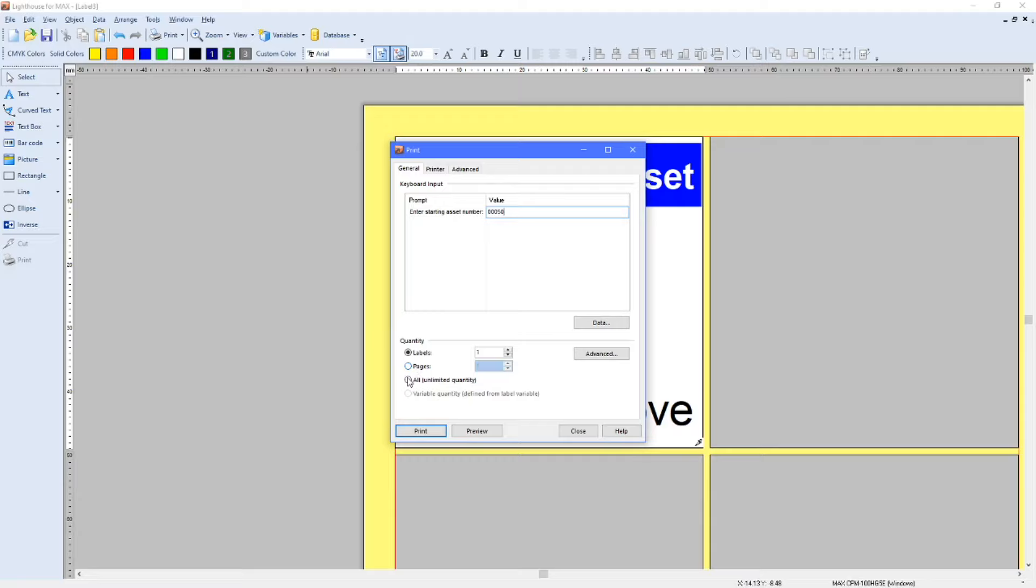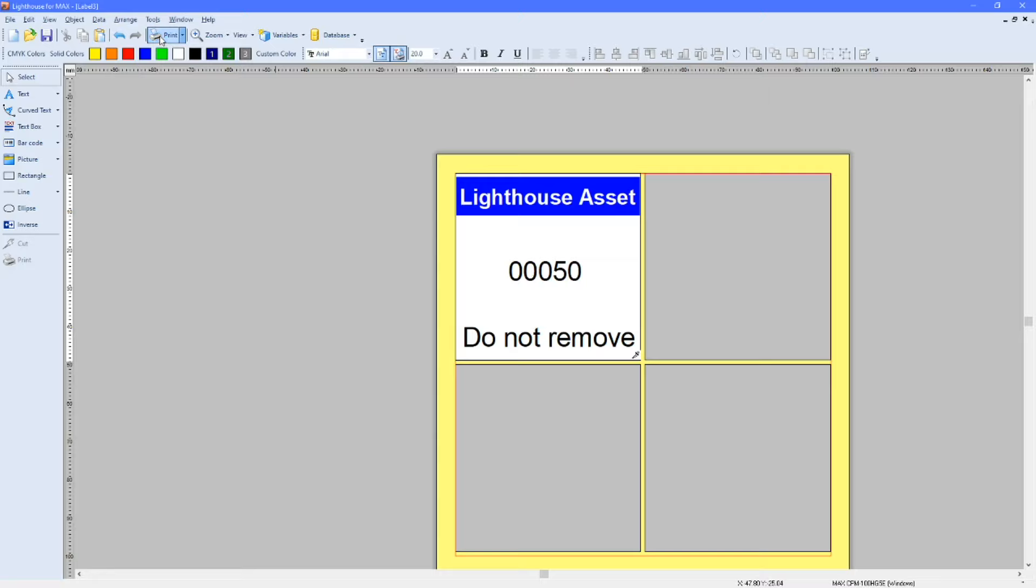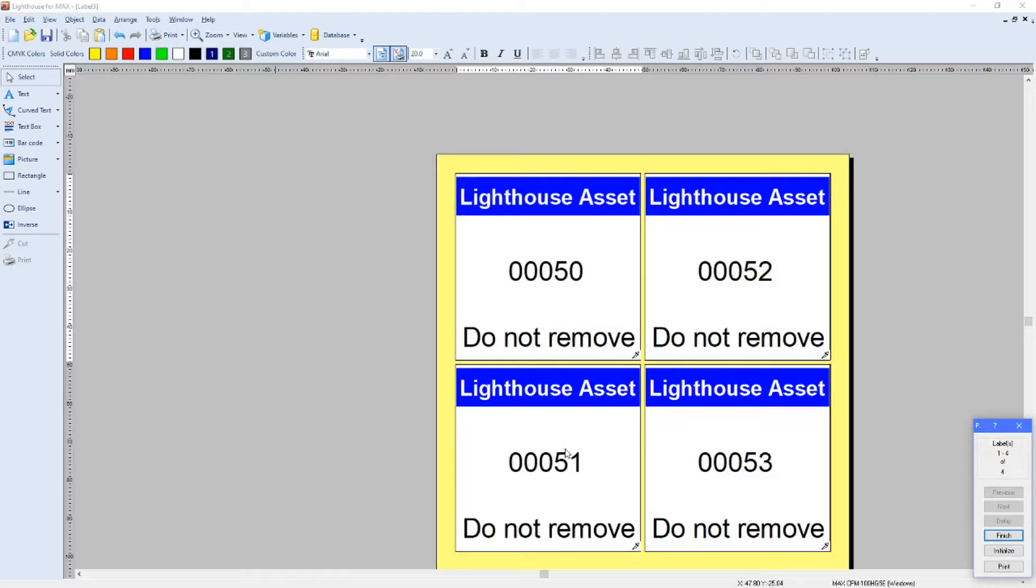And then down here, you have labels and pages. Whenever we're adjusting the rows and columns, we're printing a batch of labels, just make sure you click on pages, and we'll just keep it as one page of four labels for now. You can click on preview. If I just zoom out, I'm going to do that again, so you can see how it's actually going to be printed. You can see there, you've got 50, 51, 52, and 53. And yeah, the only thing to do now is click print.